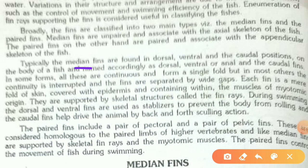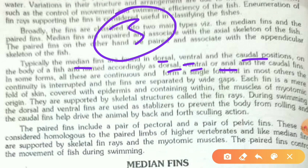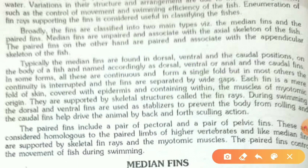Median fins are found in dorsal, ventral, and caudal positions on the body of a fish and named accordingly. Median fins are of three types: first is the dorsal fin, second is the ventral fin, and the third is the anal fin, also sometimes known as the caudal fin. In some fishes all three are continuous forming a single fold, while in most others they are separated by wide gaps.